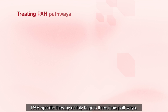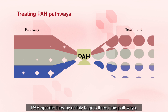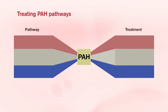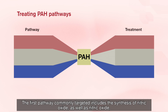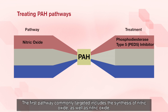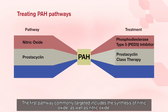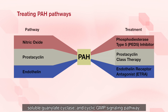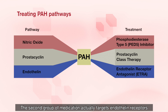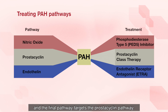PAH-specific therapy mainly targets three main pathways. The first pathway includes the synthesis of nitric oxide, as well as the nitric oxide, soluble guanylate cyclase, and cyclic GMP signalling pathway. The second group of medications targets endothelin receptors, and the final pathway targets the prostacyclin pathway.